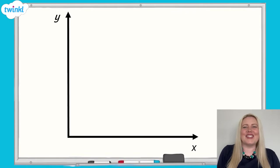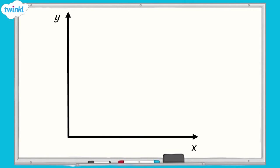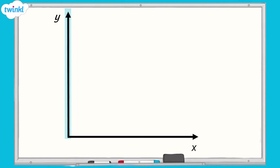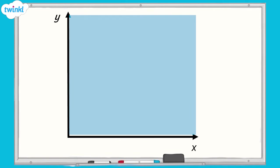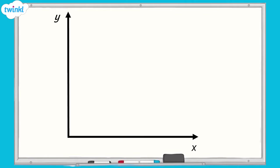Now let's look at how we find missing coordinates on a different type of coordinate grid. What do you notice that's the same and what's different about this type of grid and the ones we've already looked at? This coordinates grid doesn't have any grid lines or numbers, although it does still have both an x-axis and a y-axis. We can also see that there is only one quadrant shown. As there are no grid lines or numbers, when we find missing coordinates on a grid like this, we need to have other points labelled on the grid to help us.